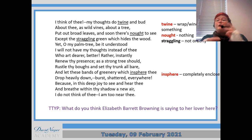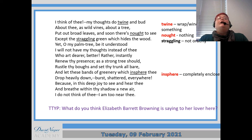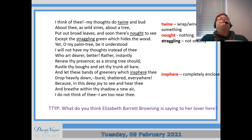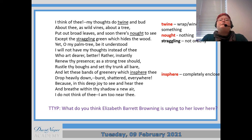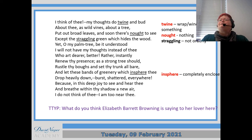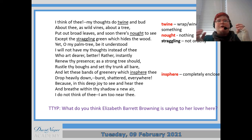'My thoughts do twine and bud' — twine is to wrap around, so her thoughts are wrapping around the idea of him; she can't escape him, he's central to everything. It also links to the extended metaphor in this poem to do with vines and a tree — vines twine around the trunk of a tree. The word 'bud' is believed to be a euphemism — that's when you say one word to mean something else — possibly suggesting the clitoris, the centre of women's pleasure. So she's thinking of him, possibly with a sexual nature. The adjective 'wild' is important too — these aren't careful, gentle vines; they're wild, as though she's out of control of her emotions.